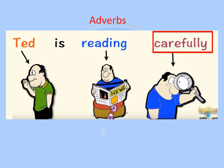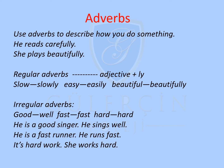So it's time to explain adverbs. We use adverbs to describe how you do something. For example: he reads carefully, she plays beautifully. If we ask the question in our mind, then we find that the answer is about how something is done — the way that something is done. She plays beautifully: how does she play? In which way does she play? She plays in a beautiful way, or beautifully.